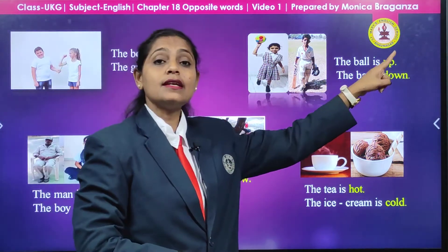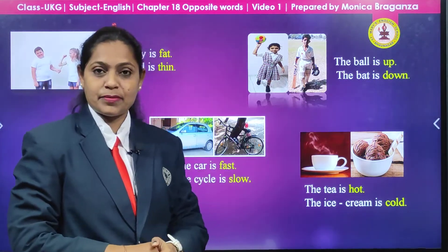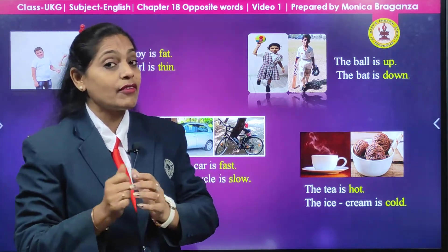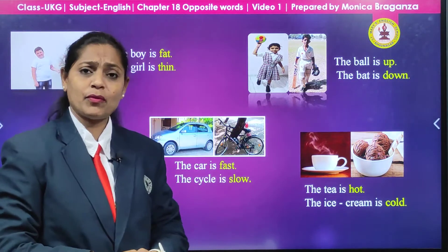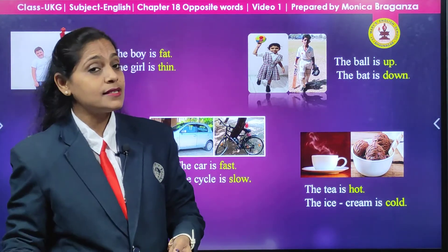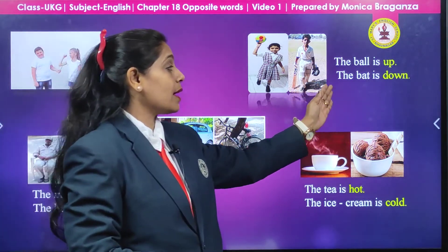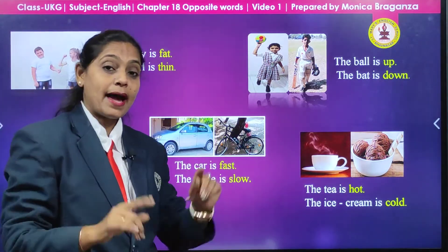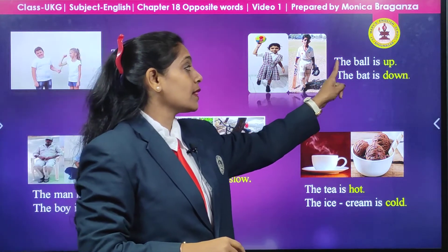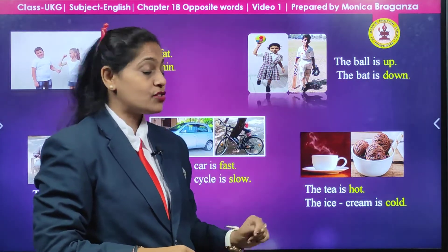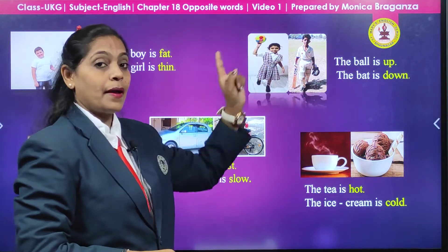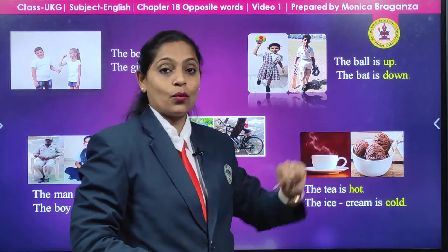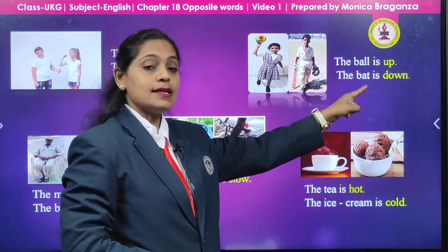Here we are having another picture. The boy is there and he is having a bat in his hand. Now see and tell me where is the bat — it is down. So what we are going to say: the bat is down. The ball is up but the bat is down.